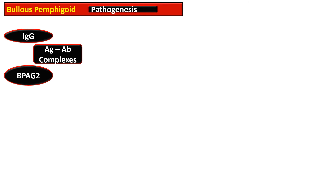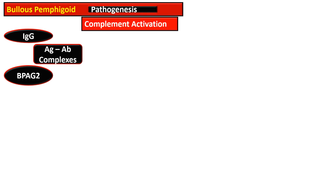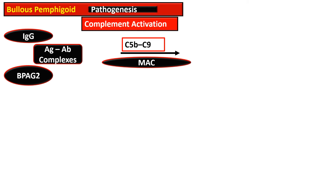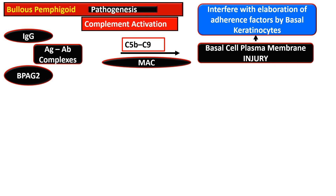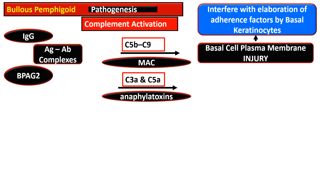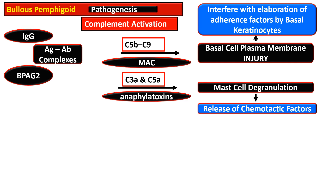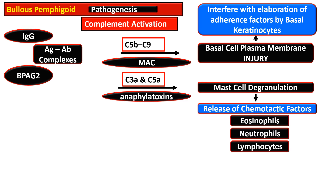Bullous pemphigoid is an autoimmune blistering disease where immunoglobulin G is directed against bullous pemphigoid antigen 2. The antigen-antibody complexes that form result in complement activation. The membrane attack complex (C5b to C9) causes basal cell plasma membrane injury, interfering with adherence factors secreted by basal keratinocytes. Anaphylatoxins C3a and C5a result in mast cell degranulation, releasing chemotactic factors that recruit eosinophils, neutrophils, and lymphocytes.